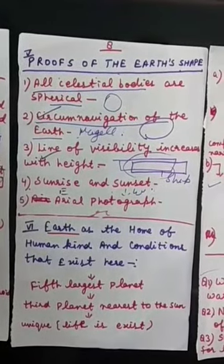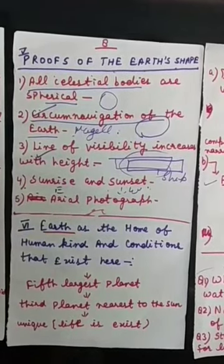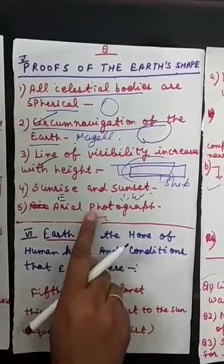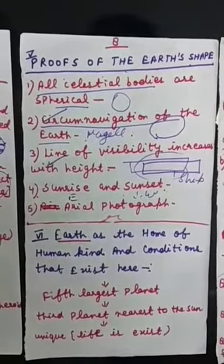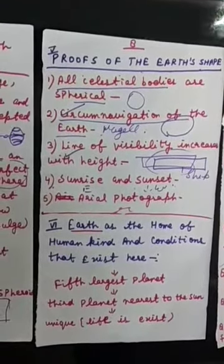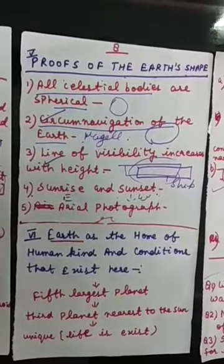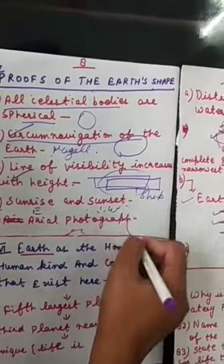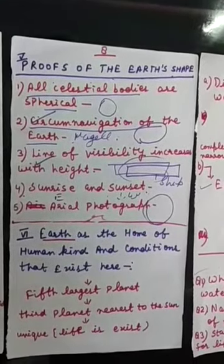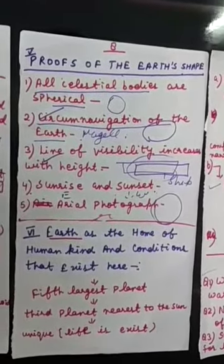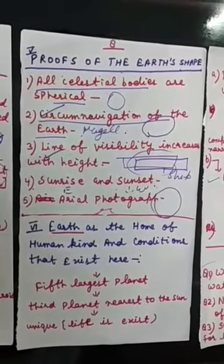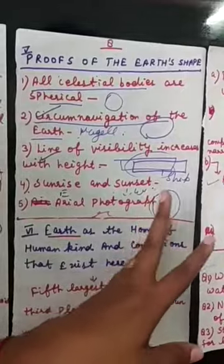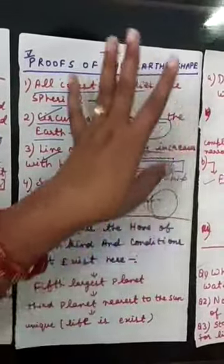The next proof is aerial photographs. When photographs are taken from satellites, they are called aerial photographs. The aerial photographs of the earth sent by artificial satellites and various spacecraft clearly show the curvature and outline of the earth's surface. Pictures taken from space by astronauts clearly prove the sphericity — the spherical shape — of the earth. These are the proofs of the earth's shape.